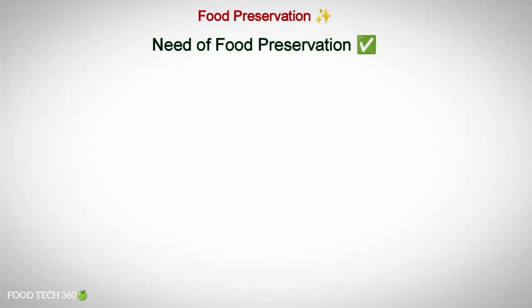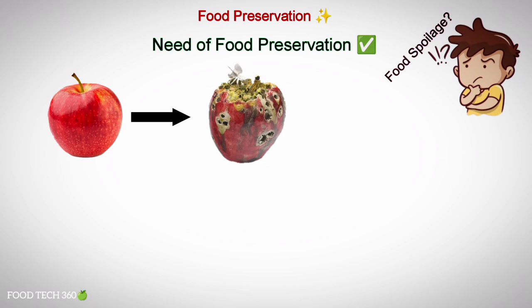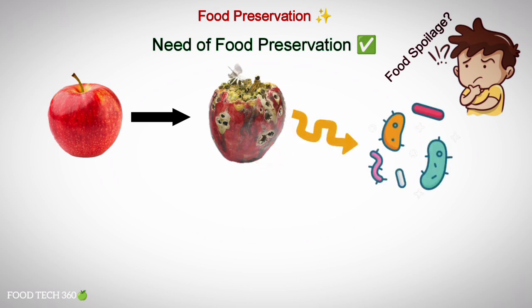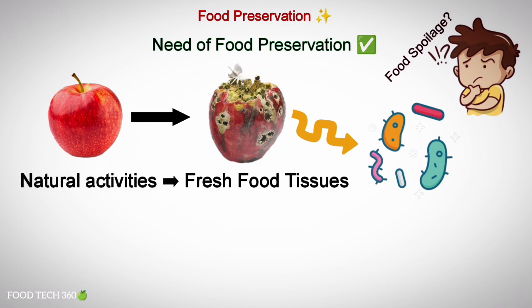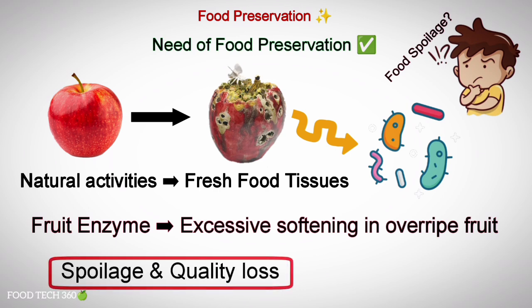You may be thinking: what is the need of food preservation? For that you have to understand what is food spoilage. Food spoilage is a process of food becoming unsafe or unacceptable for human consumption. Spoilage is normally caused by the growth of microorganisms in foods. Other losses in quality are caused by natural activities in fresh food tissues — for example, the excessive softening in overripe fruit caused by fruit enzymes. Spoilage and quality losses are partially or completely controlled in properly preserved foods.